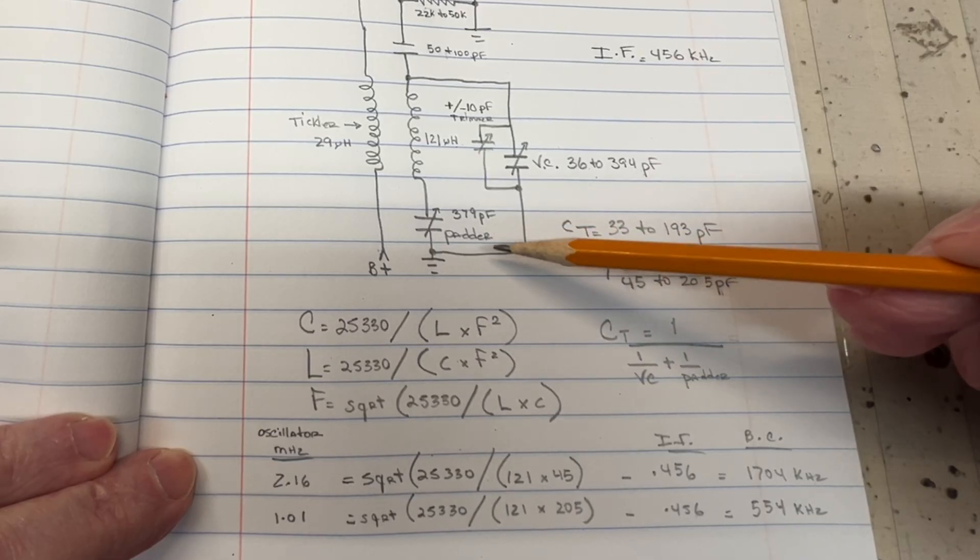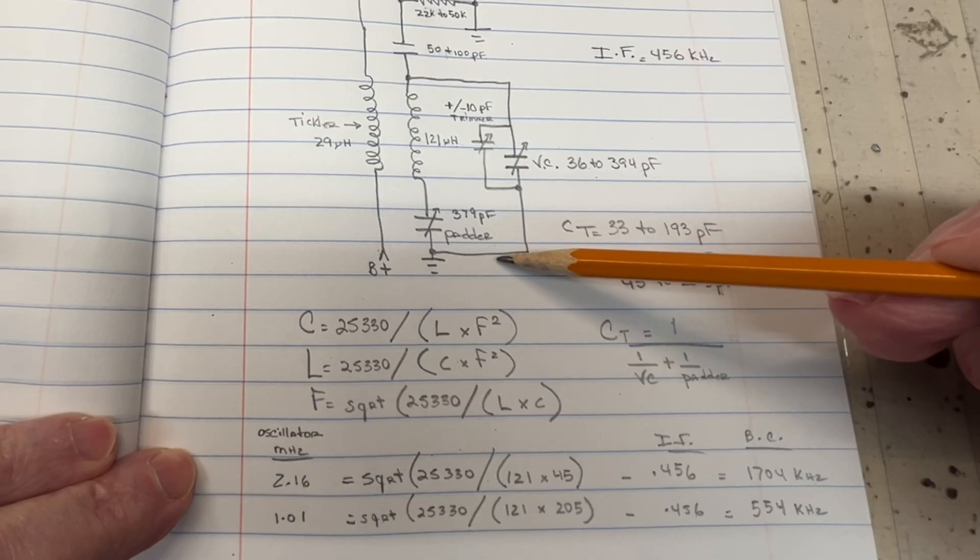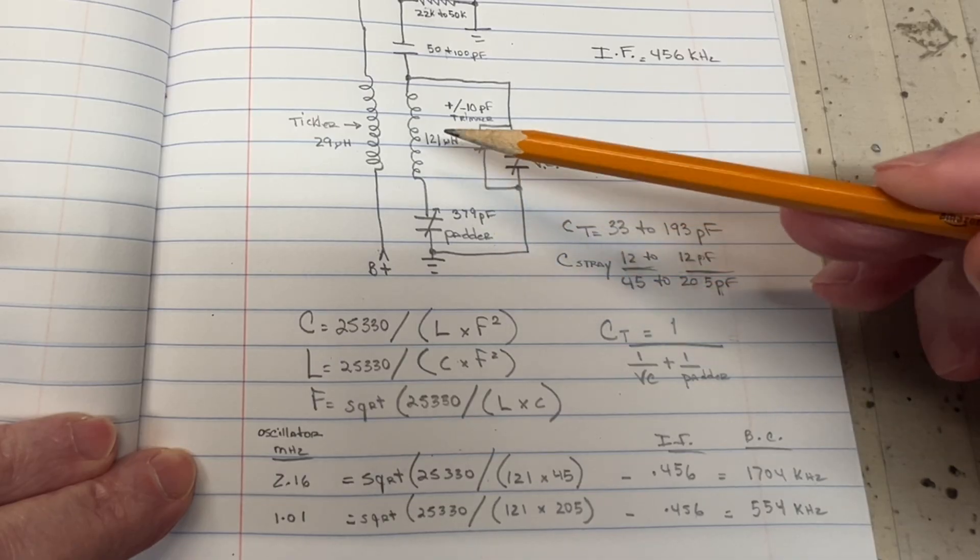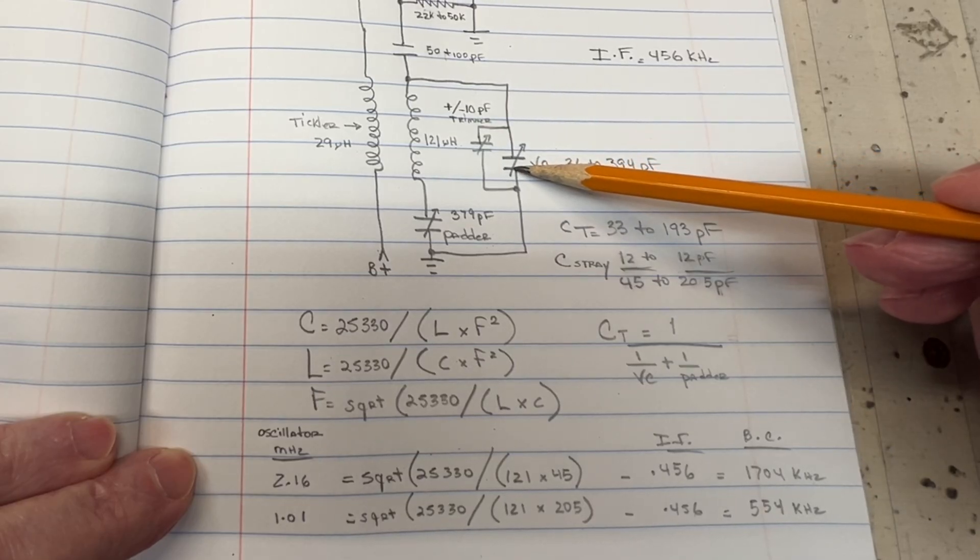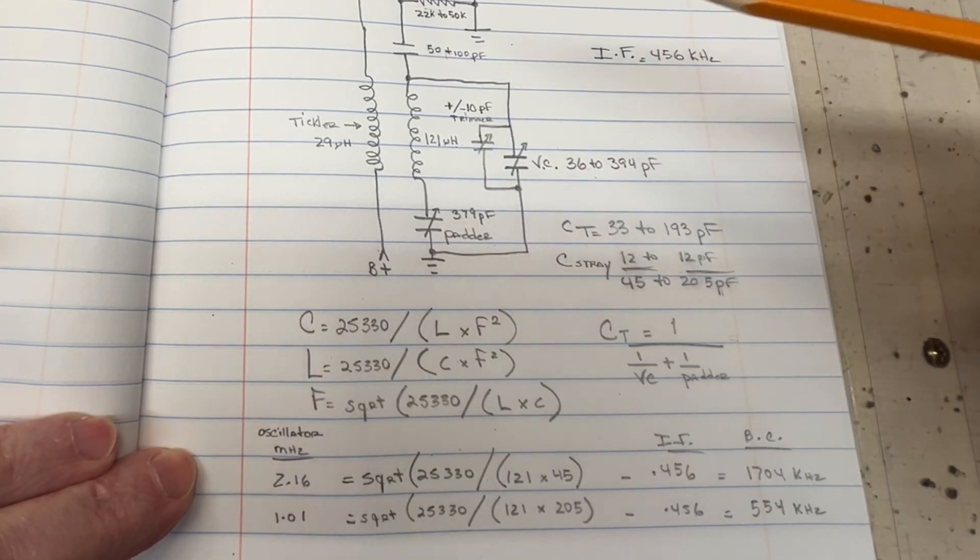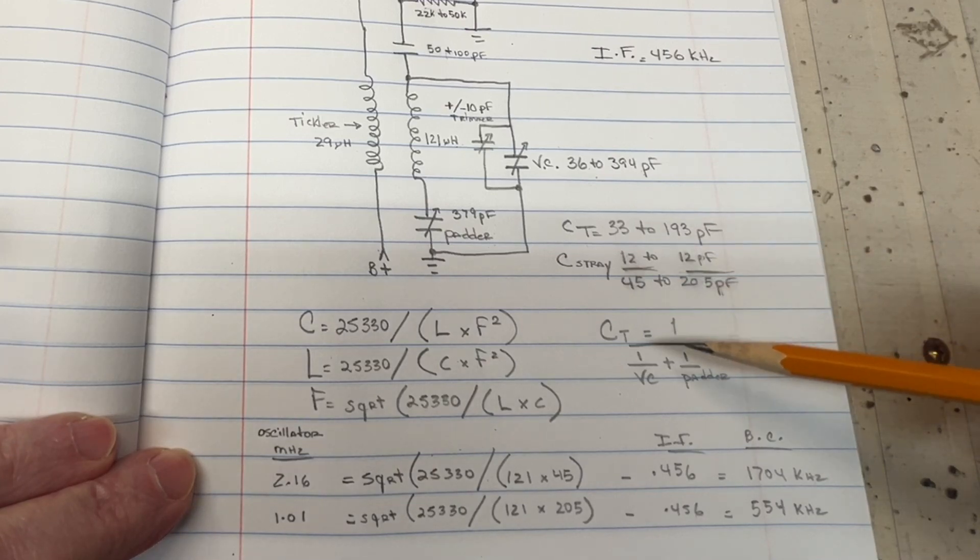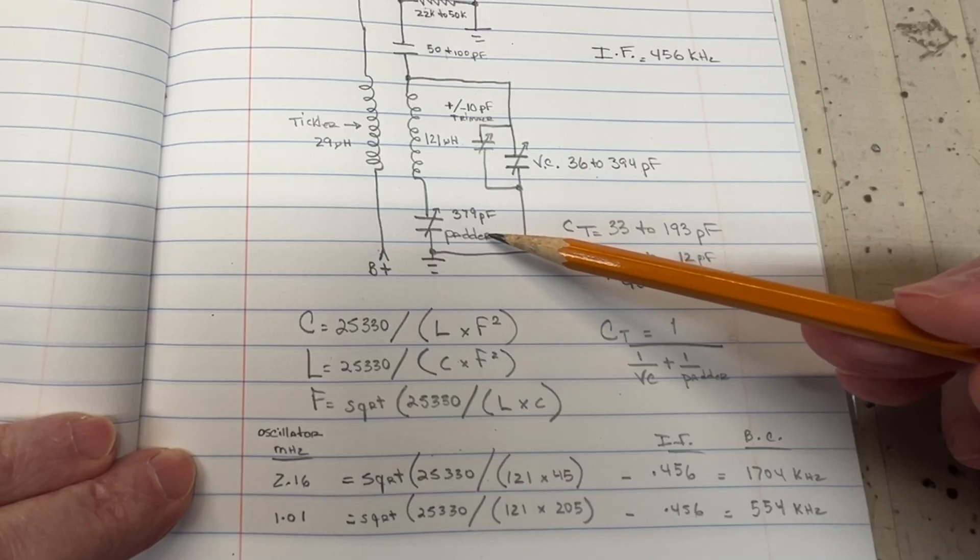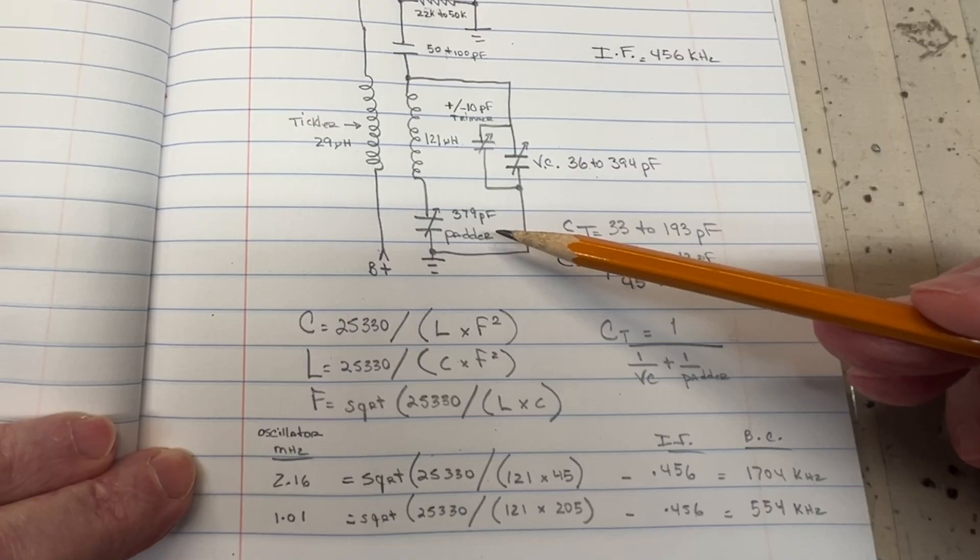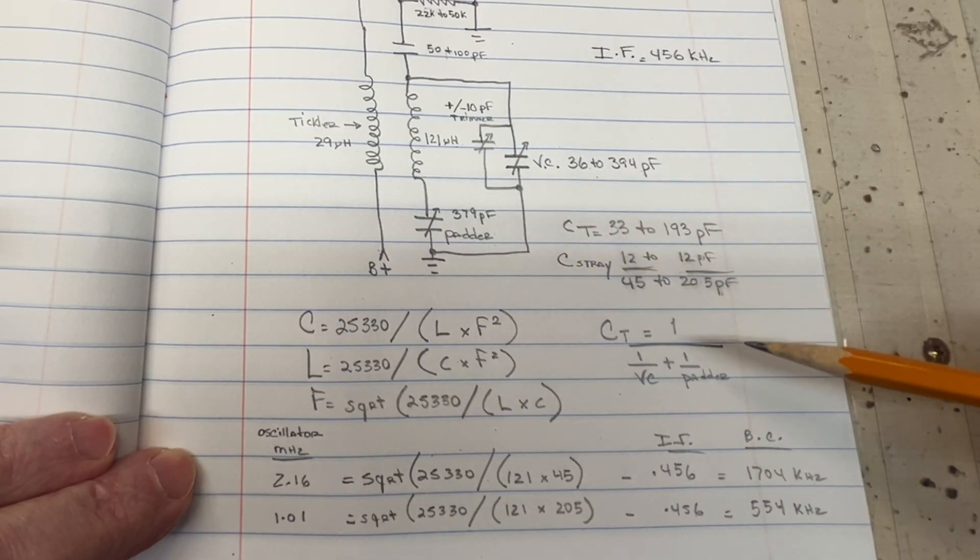You can see the padder is in series with the coil and the other variable capacitor here. So simply, if we do the math, we can figure out what the total capacitance would be. As found in my receiver, the padder is pre-adjusted to 379. So I haven't touched that at this point in time. 379 pF.